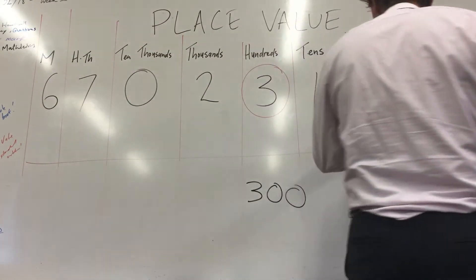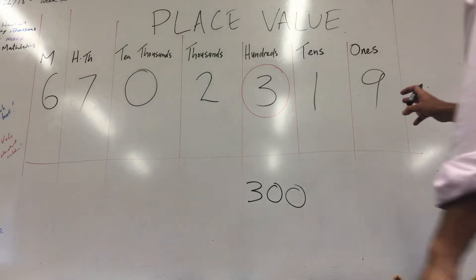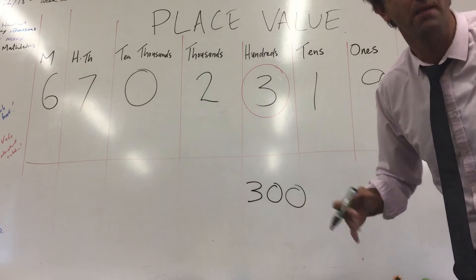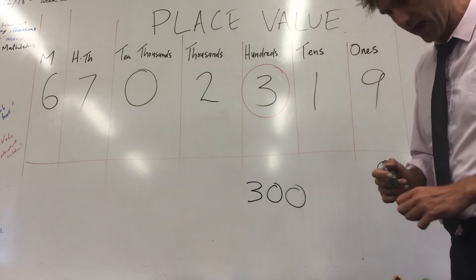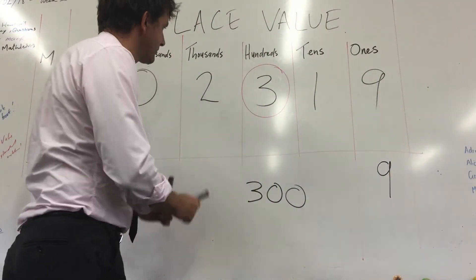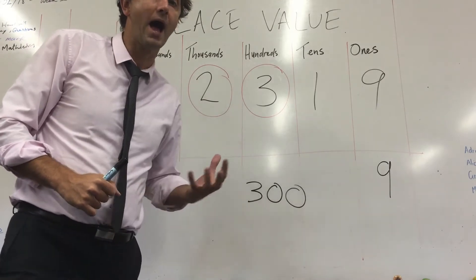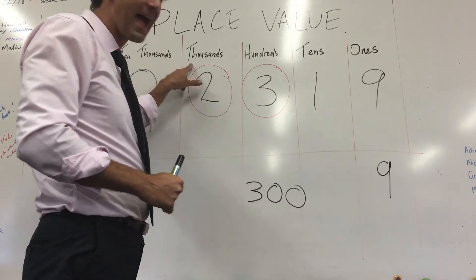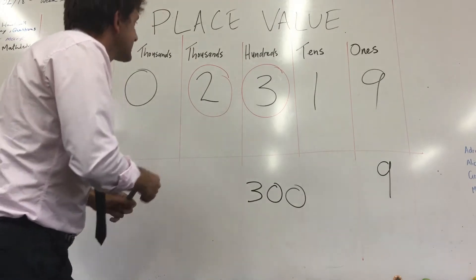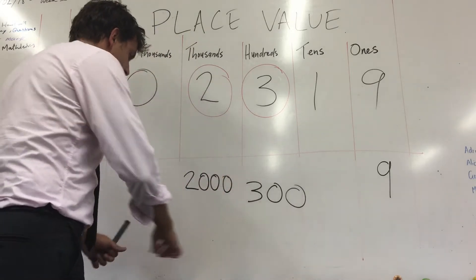See this nine all the way down here? This nine is equal to nine ones. That's nine times one, so that's just equal to nine. See this two? That two is not actually just equal to two — that's not like two doughnuts — because that's a two in the thousands place value column. We say this two is equal to two thousand.